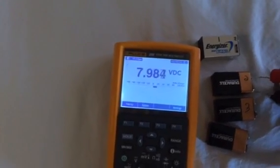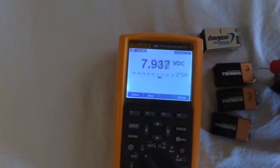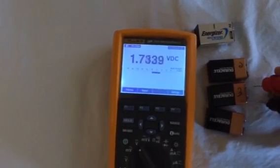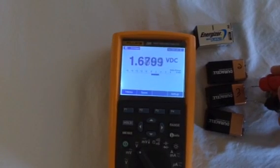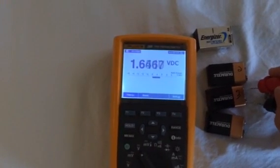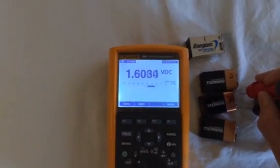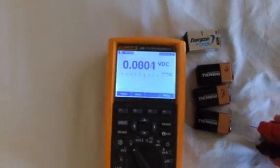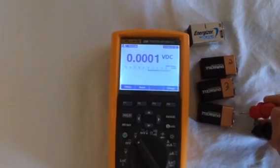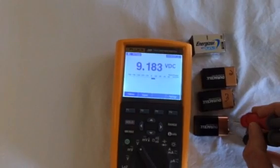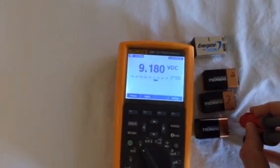Second battery, 7.9 volts, third battery, say about 1.6 volts. This battery is obviously dead. Then the brand new battery, 9.18 volts.